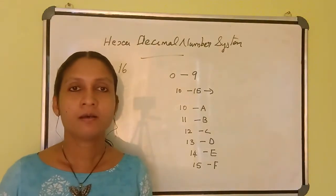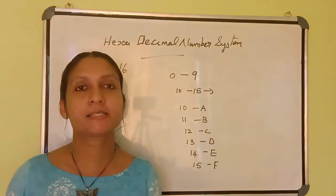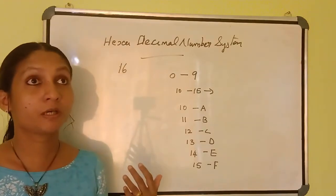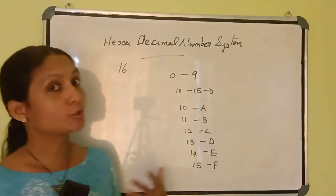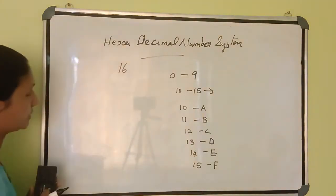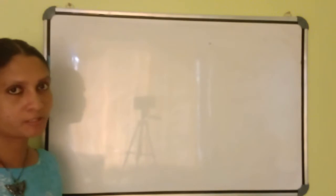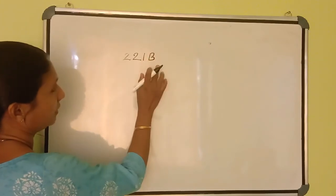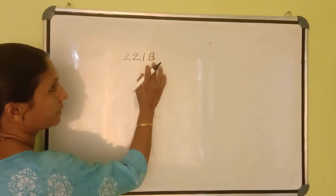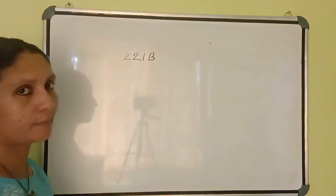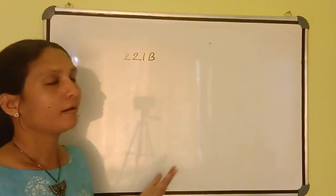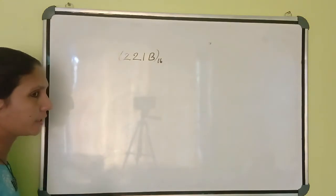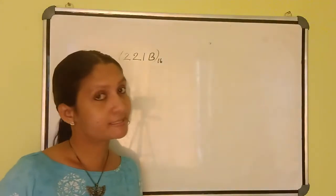These are the basic things of this hexadecimal number system. Now, how can you convert hexadecimal to decimal? You represent a hexadecimal number — for example, 221B, where this B represents 11. Like this way, we can represent a hexadecimal number. What is the base? 16 is the base. Then, how can you convert a decimal number to hexadecimal? I will show you.